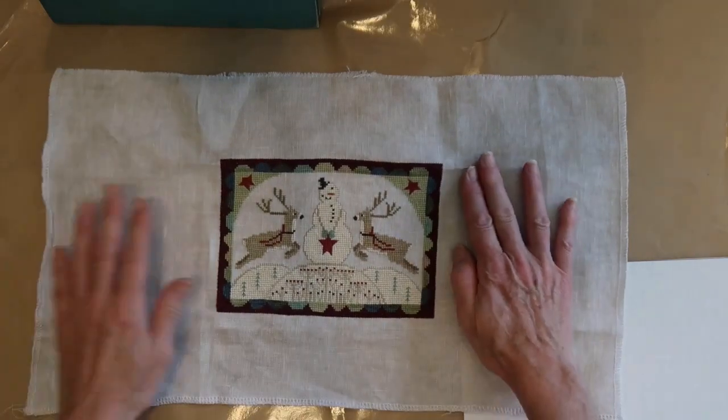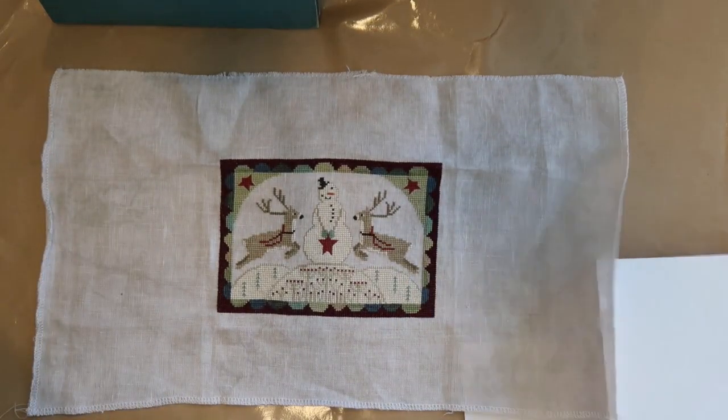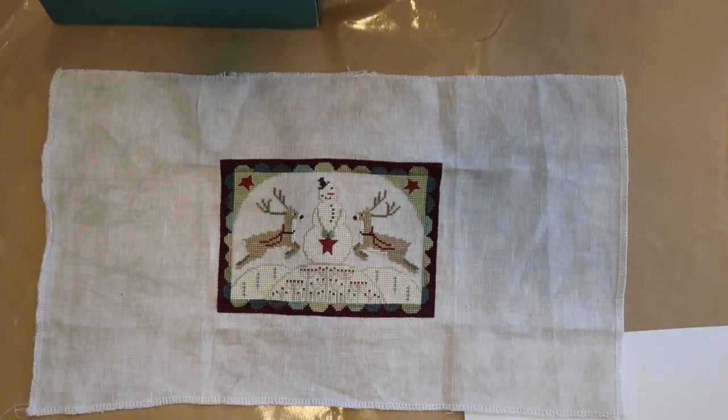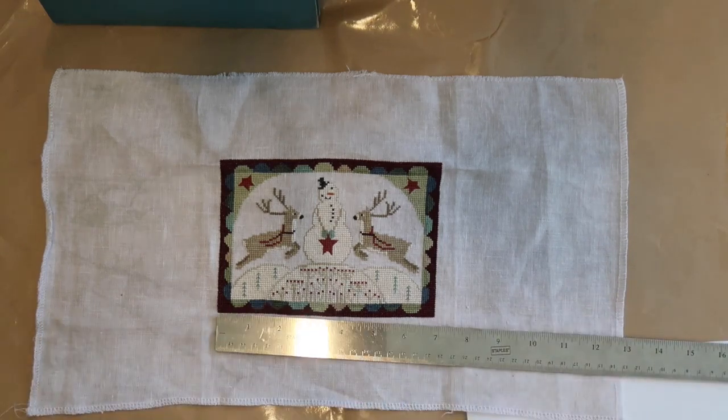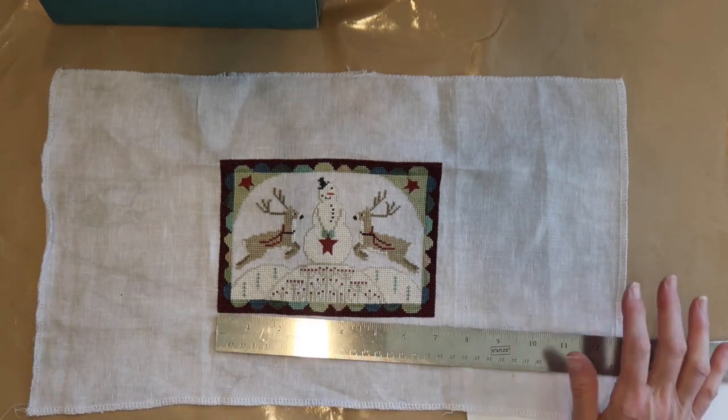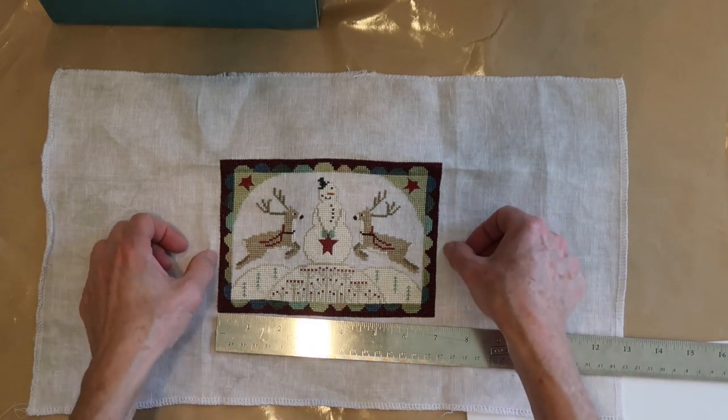Okay, so what I'm going to do first is I'm going to adhere my cross stitch piece to sticky board. So the first thing that I want to do is I want to measure and I don't want much linen showing.